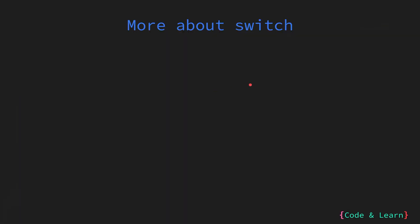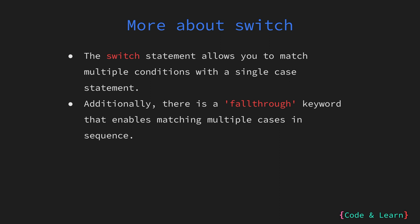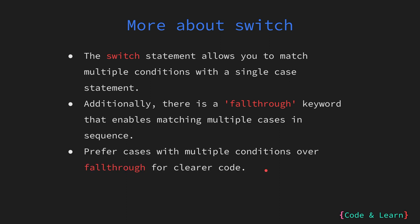Let's look at some more facts about the switch statement in Go. In a switch statement, you can define multiple matching conditions in a single case. This allows you to handle multiple scenarios or conditions with a single case. The fallthrough keyword is also available to transfer control to the next case, regardless of whether it matches the condition. This means code execution continues into the next case block even if the current case is true. It is recommended to use cases with multiple conditions over fallthrough because it leads to more readable and understandable code, and in Go we like to be as explicit as possible.